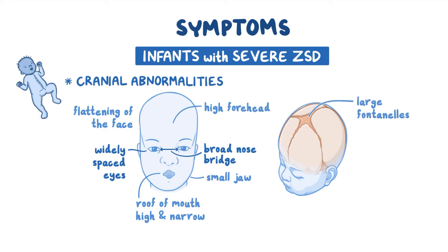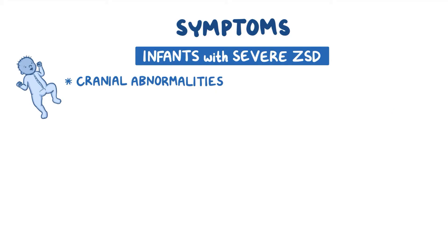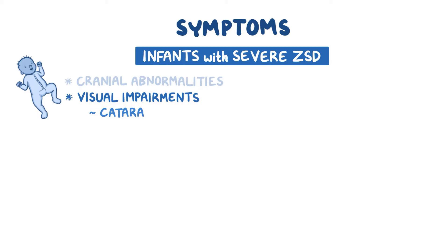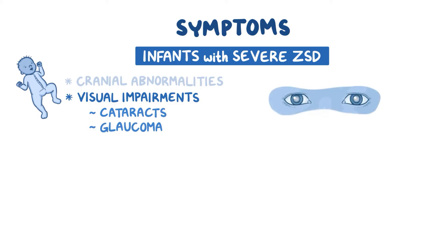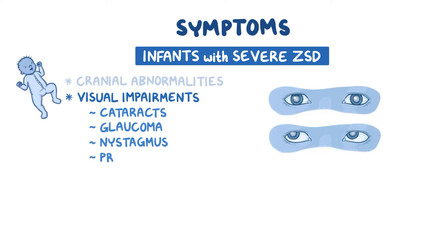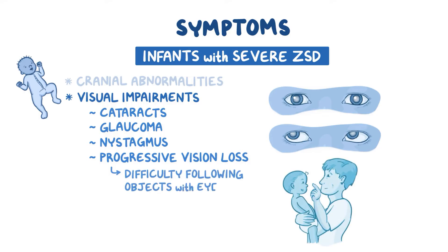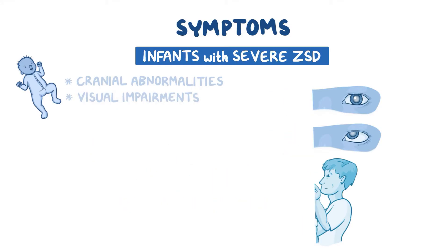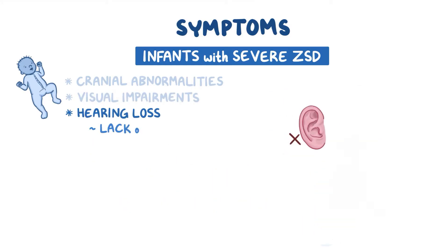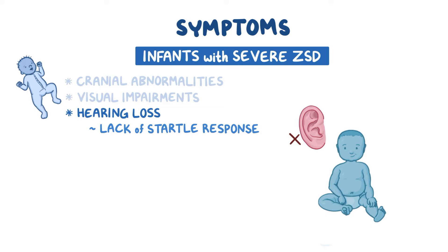Infants with ZSD may experience deteriorating visual, auditory, and neurological symptoms. Visual impairments may include cataracts, glaucoma, and nystagmus. Progressive vision loss may manifest as difficulty following objects with the eyes and eyes pointing in different directions. Hearing loss may present as a lack of a startle response to loud noises and not turning towards sounds.